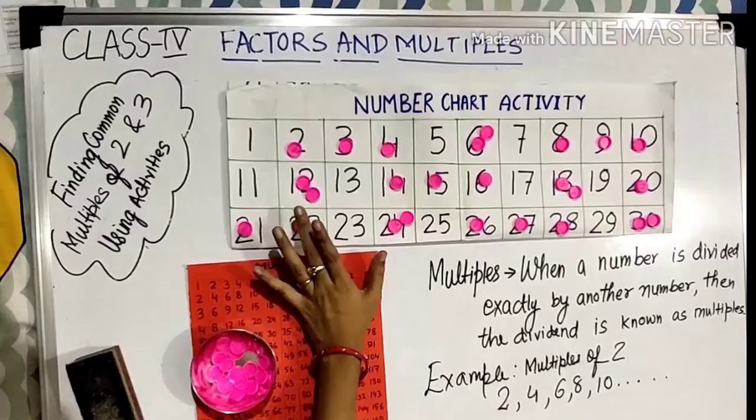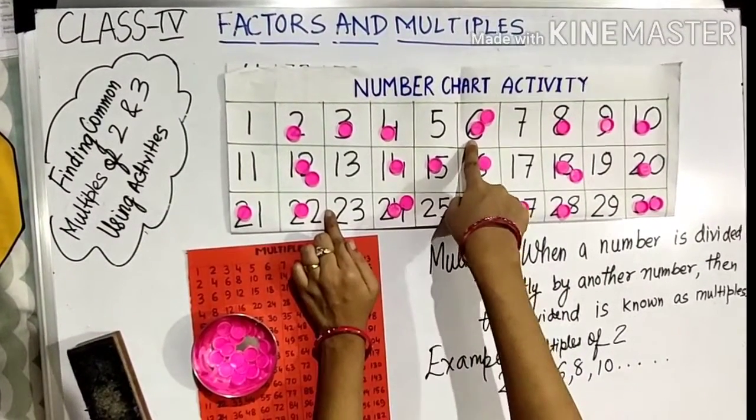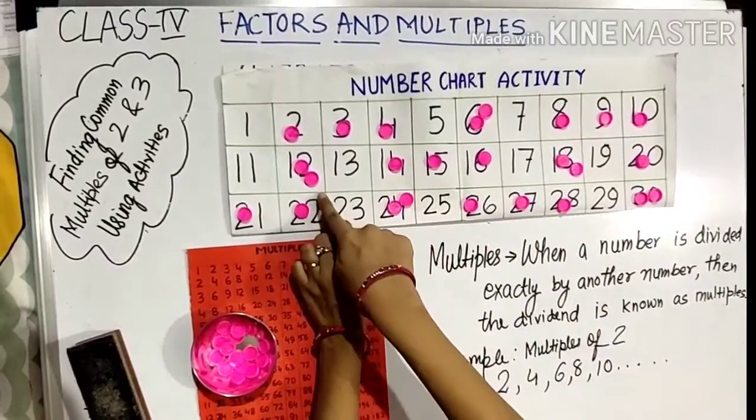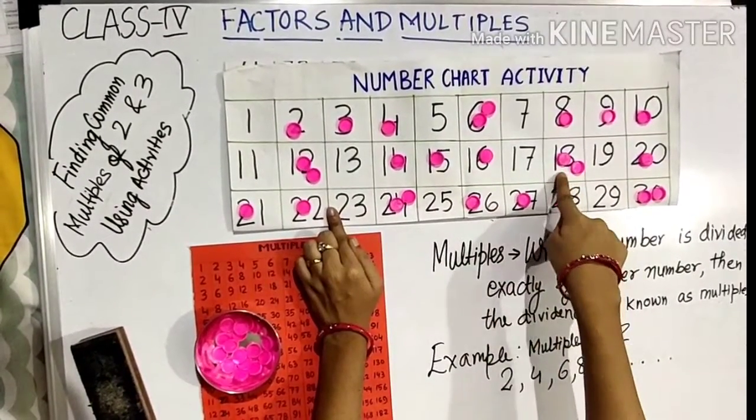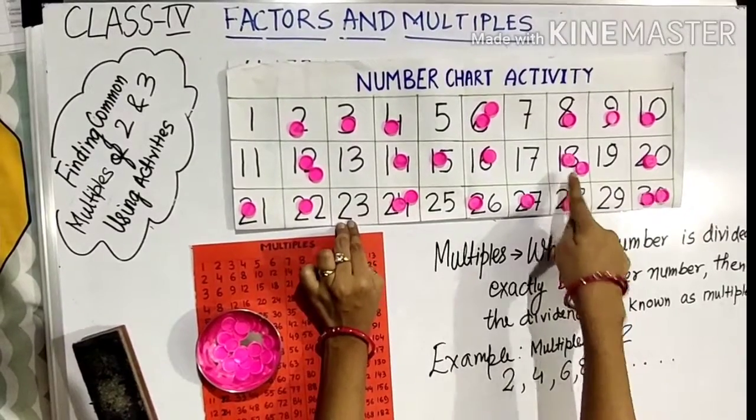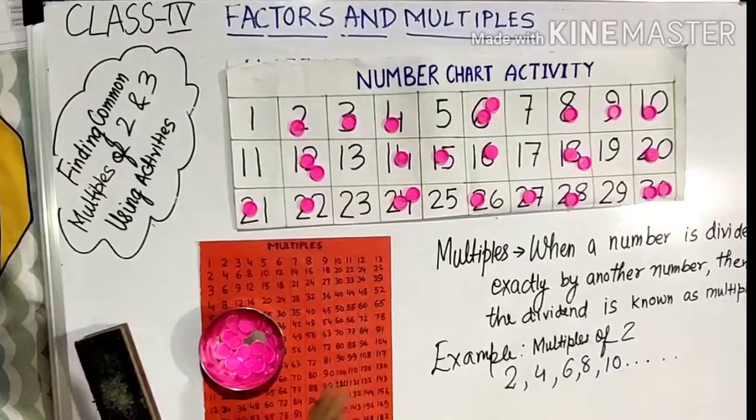Now what are the common multiples of 2 and 3? The number is more than 1. So 6 is the common multiple of 2 and 3, 12 is the common multiple of 2 and 3, 18 is the common multiple of 2 and 3, 24 is the common multiple, and 30 and so on.